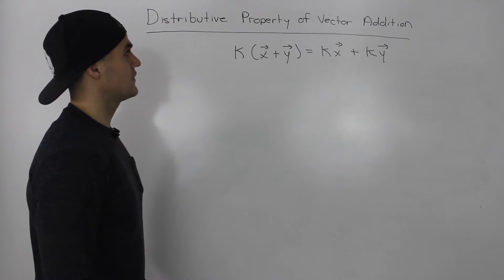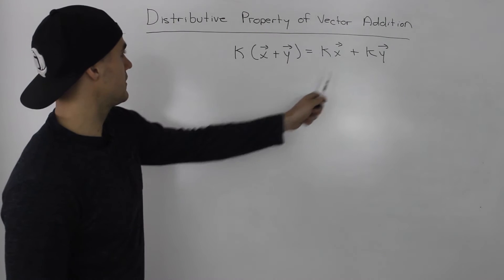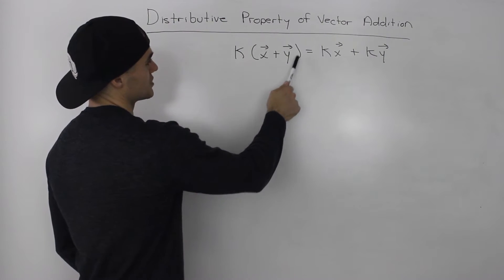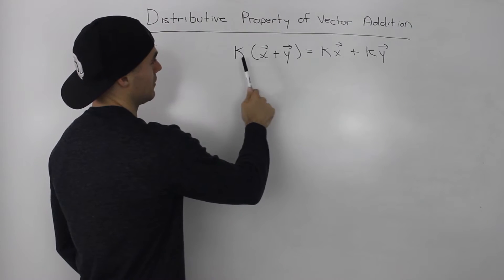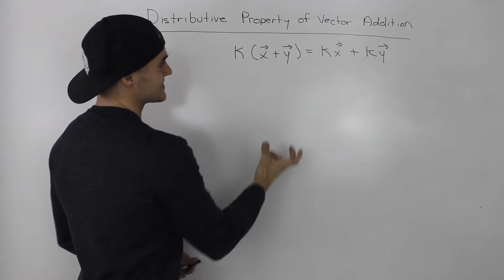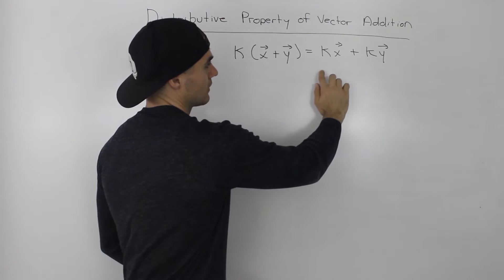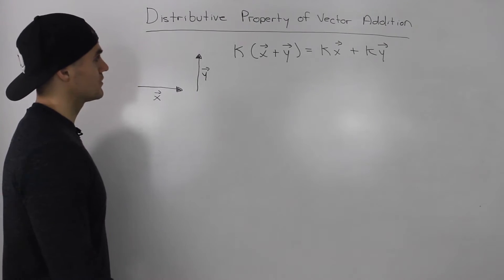Let's talk about the distributive property of vector addition. So this is it right here. If we took the resultant vector, any vector x plus y, and we multiply it by a scalar, well that would be the same as if we took each separate vector, multiplied it by the scalar, and then added them together and found that resultant. Like usual, this property will be best shown through a diagram.